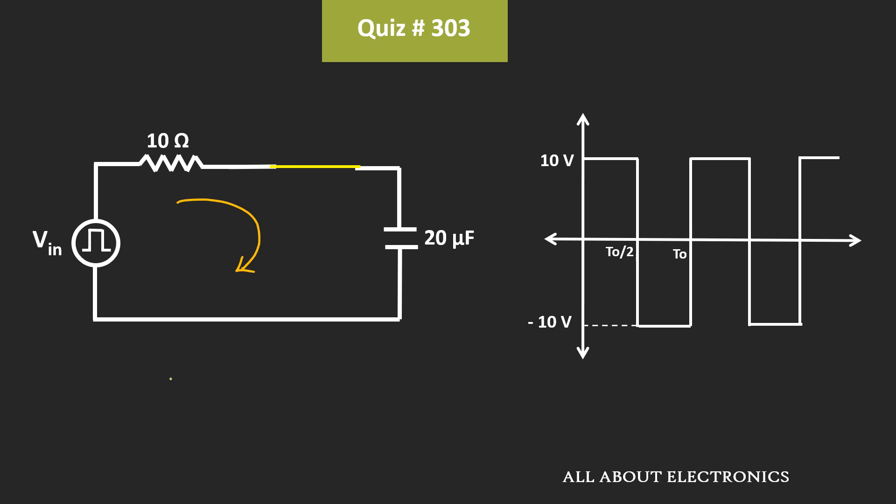Now here, if you see the RC time constant of the circuit, this RC time constant is much less than the time period of the circuit. To be precise, this RC time constant is equal to T divided by 20.